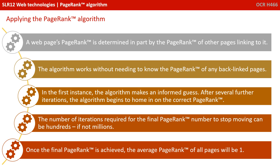A webpage's PageRank is determined in part by the PageRank of all the other pages that link to it. The algorithm is smart enough to work without actually needing to know the PageRank of any backlinked pages. In the first instance, the algorithm simply makes an informed guess. But after several iterations, the algorithm begins to home in on the correct PageRank. The actual number of iterations required for the final PageRank number to stop moving can be hundreds, if not millions. Once the final PageRank is achieved, the average PageRank of all pages will be one.